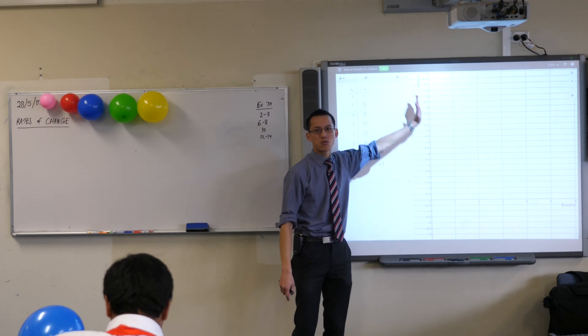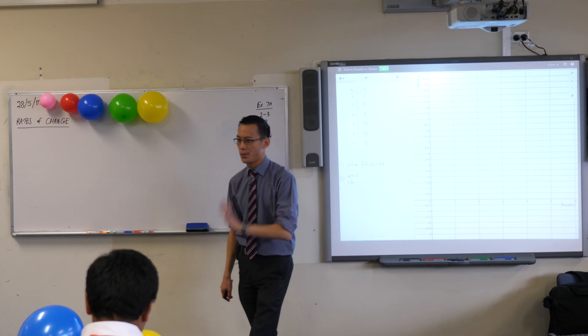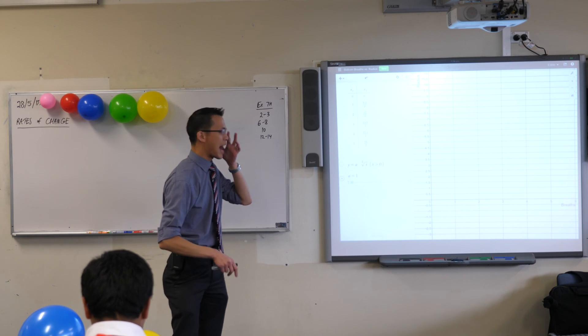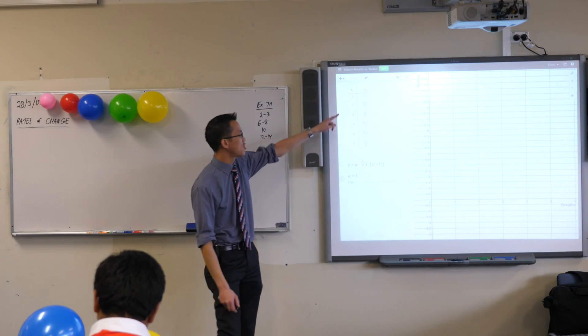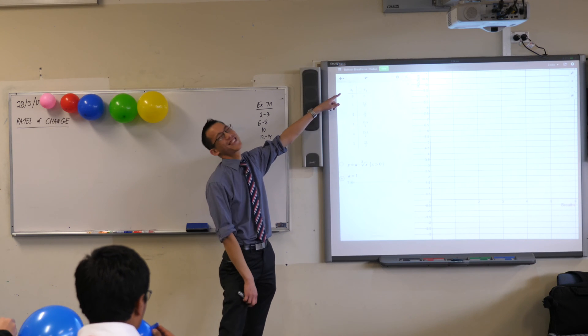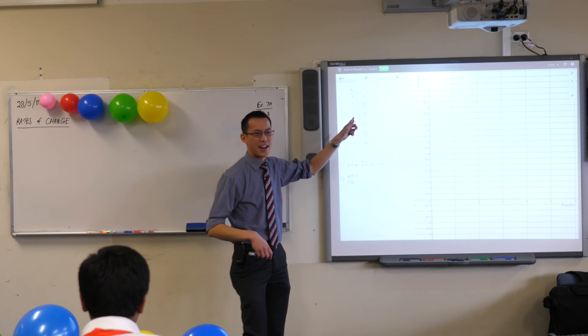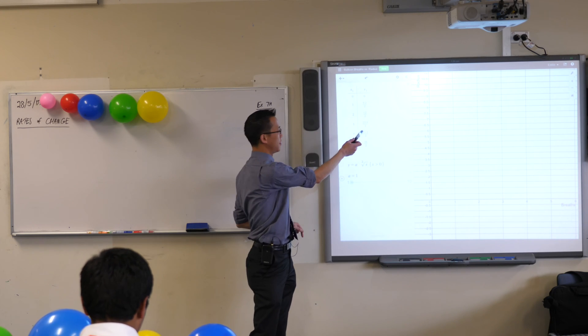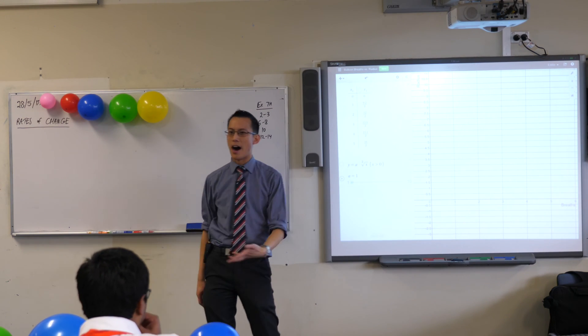And then what I'm measuring here is the radius of the balloon. Now, in fact, what I've done is I haven't measured the radius. I've actually measured the diameter, and then can you see what I've done? I've measured the diameter and I've halved it.